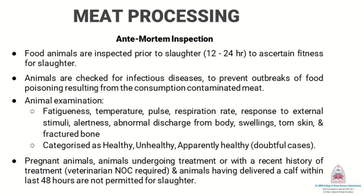The food animals are inspected prior to slaughter, 12 to 48 hours before, to ascertain their fitness for slaughtering. Animals at this stage are checked for the presence of any infectious diseases in order to prevent outbreak of food poisoning, which can result from consumption of contaminated meat.